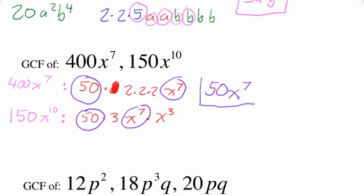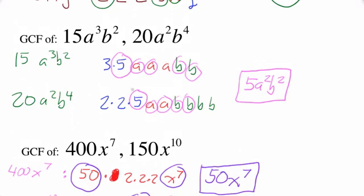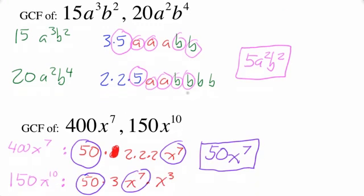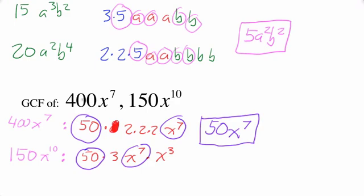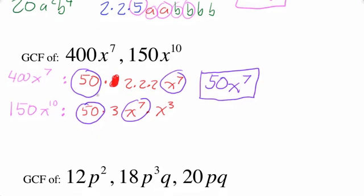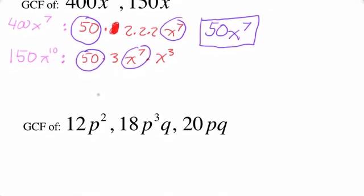In that last example I tried to streamline the process. When you're learning, you want to write everything out — the full prime factorization. But once you get good at it, you'll start recognizing common factors right away.